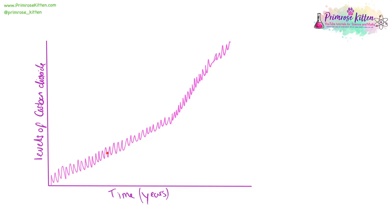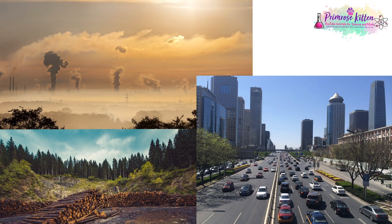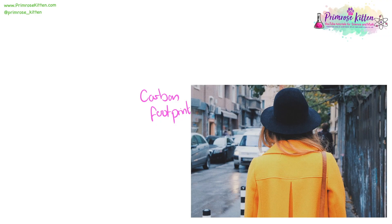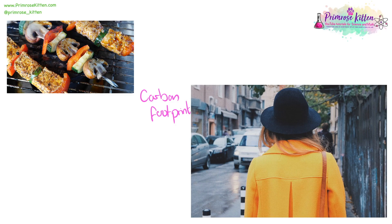We can see a gradual increase in levels of carbon dioxide, which has accelerated in recent years. Lots of human activities contribute to the production of carbon dioxide: burning fossil fuels for electricity, deforestation — cutting down trees so they can no longer take up carbon dioxide from the atmosphere — and our reliance on petrol cars. The predictions are that carbon dioxide levels and global warming will just keep increasing unless we as a population decide to do something about it. Your carbon footprint is how much carbon your daily activities contribute to the atmosphere — impacted by whether you drive or walk, and whether you eat locally grown food or food that has travelled a long distance.